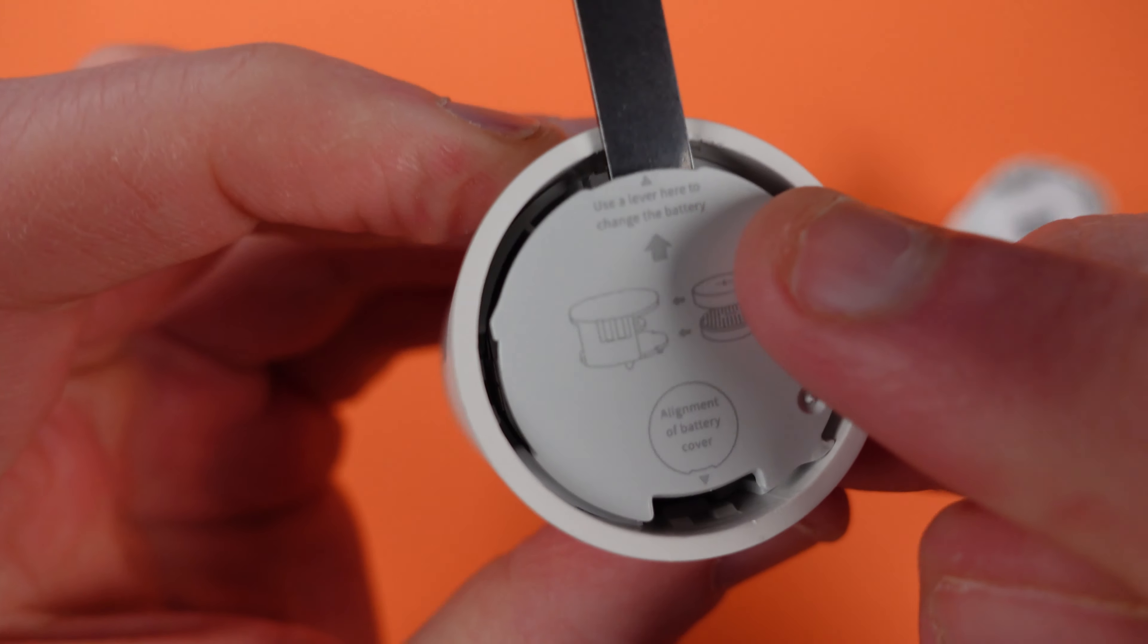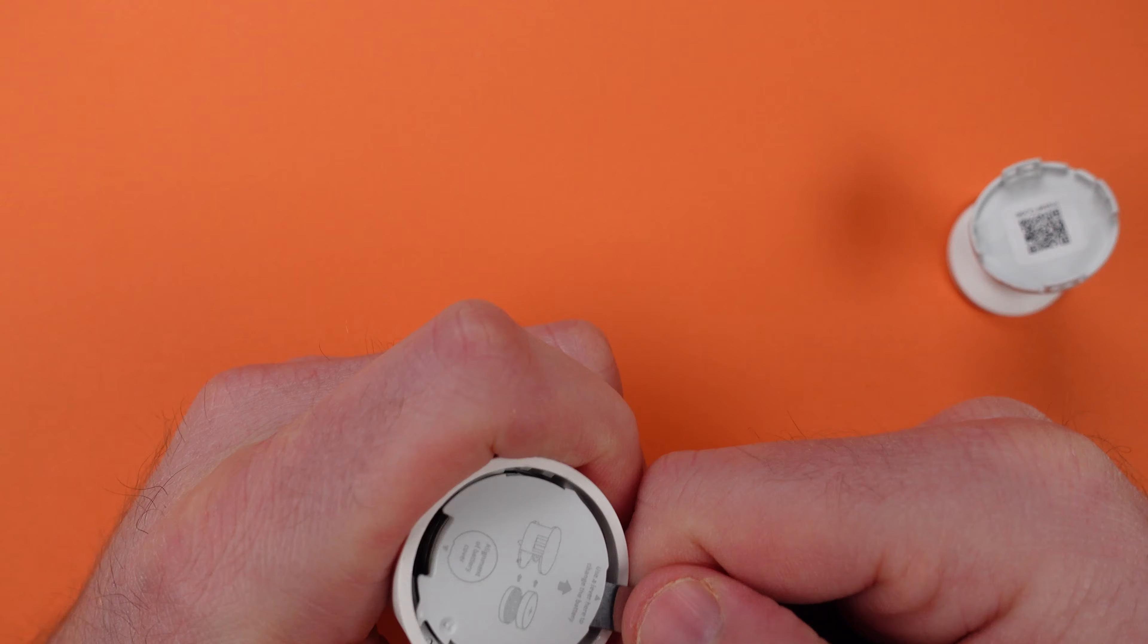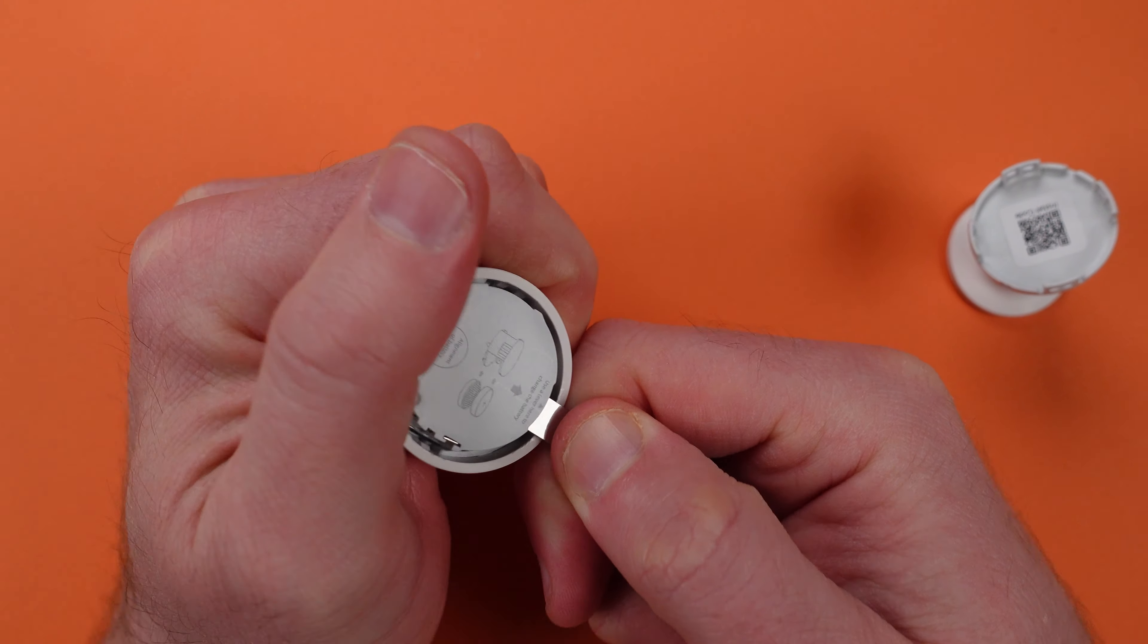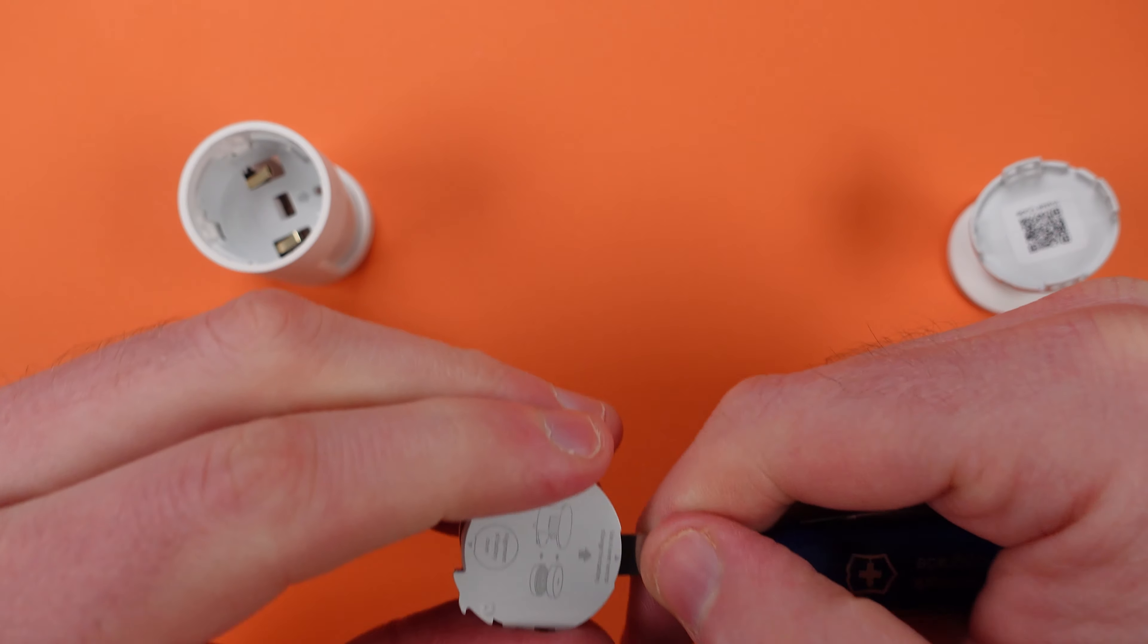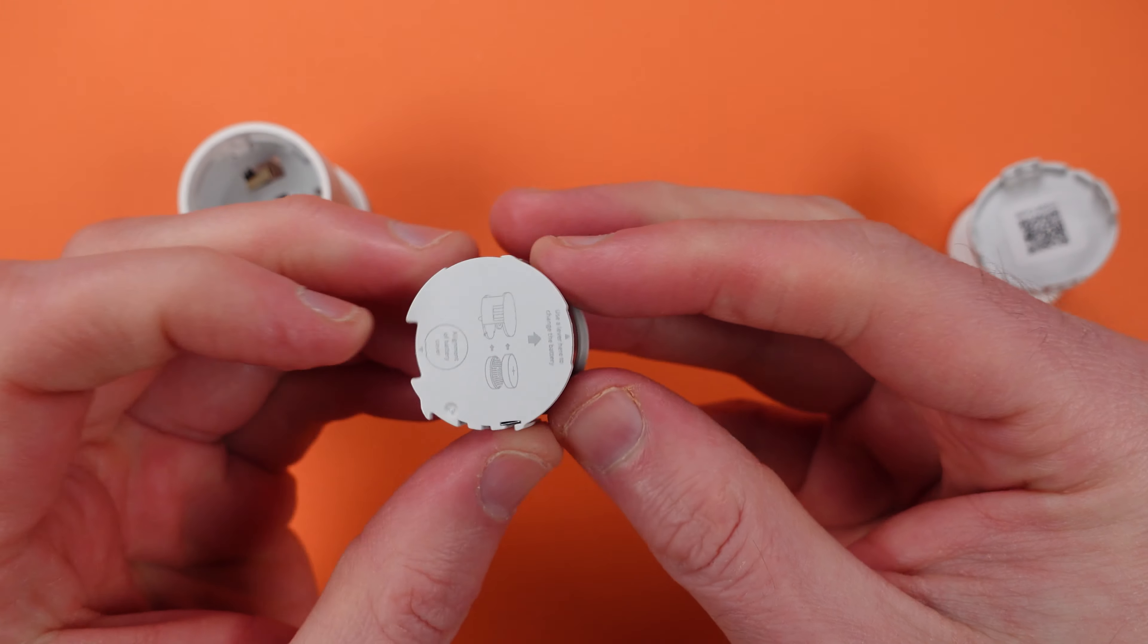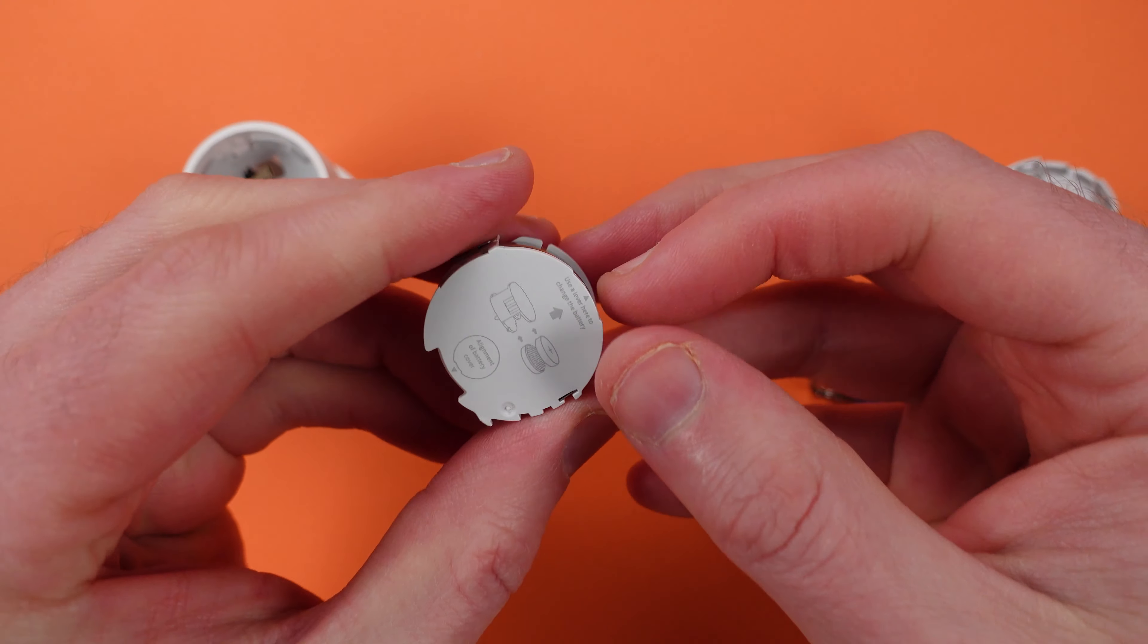Now one of the sides says to actually put a screwdriver into here, use a lever to change the battery. As you pop this, you might find that it really flies out if you put a lot of effort into it. Try and just maybe put your finger above before it pops out too far.